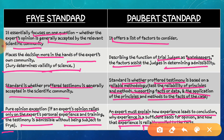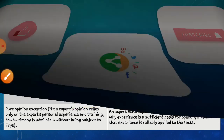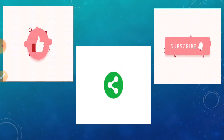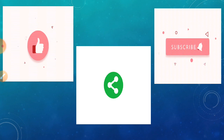اسی وجہ سے Frye Standard کے کچھ drawbacks تھے جن کی وجہ سے وہ اتنا reliable نہیں مانا جاتا تھا. Daubert Standard کو زیادہ reliable مانا جاتا تھا اور اسے maximum states میں use کیا جاتا ہے، جبکہ Frye Standard بہت ہی کم states میں use ہوتا ہے. یہ دونوں US-based rules ہیں. اس ویڈیو میں Frye Standard اور Daubert Standard کے بارے میں ہر ایک point include کر دیا ہے جو exam point of view سے important ہے.